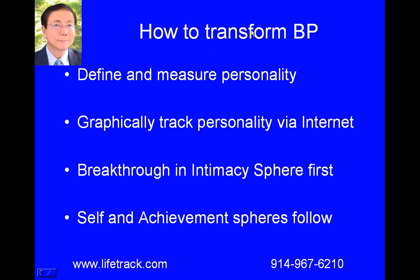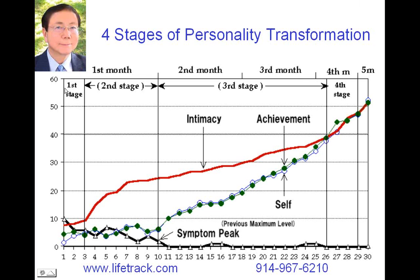How do we transform borderline personality so that individuals can overcome the symptoms? In order to do that, we take a few steps. First, define personality in such a way that we can measure it repeatedly and consistently, then graphically track subtle changes in personality via computer and internet. Then concentrate on making a breakthrough in the intimacy sphere first, allowing self- and achievement spheres to stagnate, absorbing spikes of symptoms until symptoms diminish by exhaustion. Then self- and achievement spheres can recover and converge on the intimacy sphere at a much higher level.